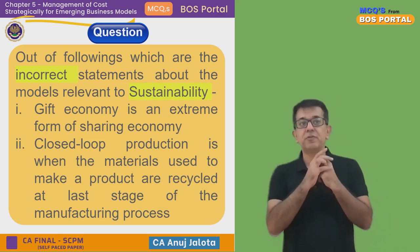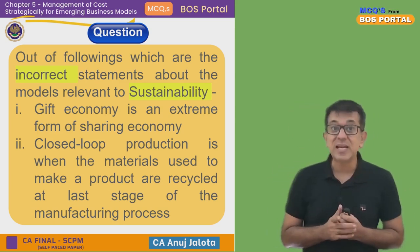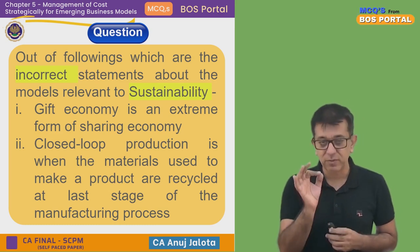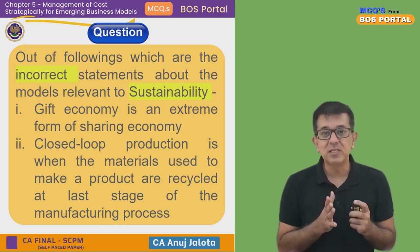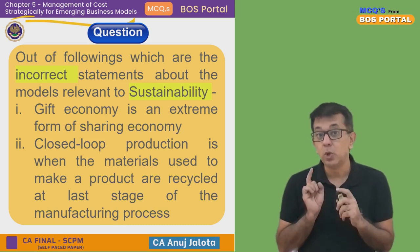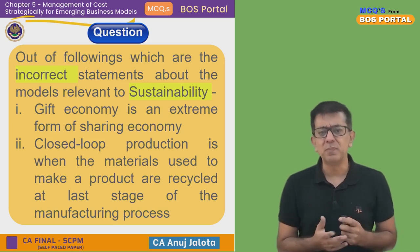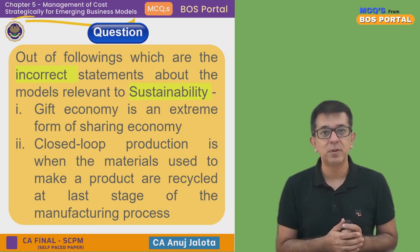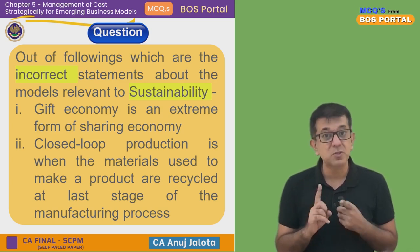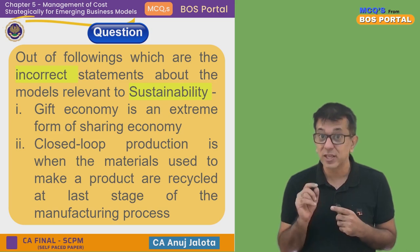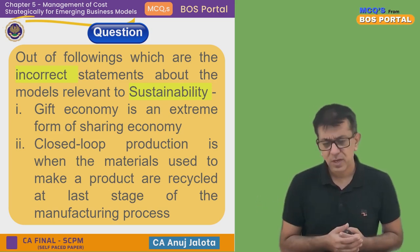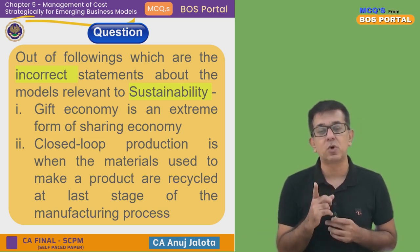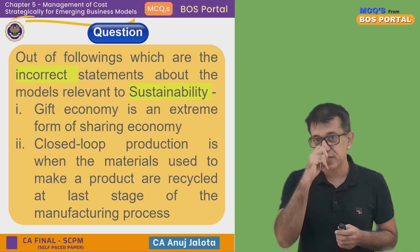Out of the following, which statements are incorrect about the models relevant to sustainability? First, I'd like to explain what sustainability means. These days, companies have to be sustainable, not only profitable. Around 15 years ago, being profitable was enough, but today we say: be profitable AND be sustainable. Companies have a duty towards society — they have to discharge their CSR. They also have a responsibility towards the planet — do not deplete environmental resources.